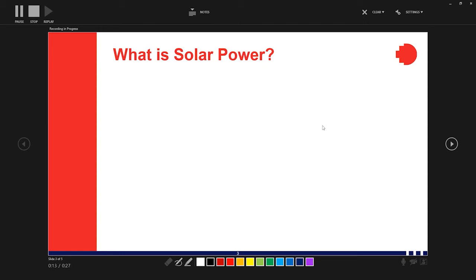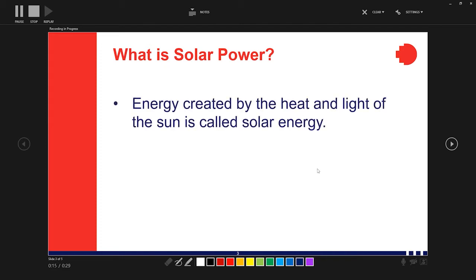What is solar power? Let's explore this. Energy created by the heat and light of the sun is called solar energy. So there you go, I've just narrated the first bullet point, and let's assume everything I'm saying right now is what I'll want to remove later, and now let's continue on to the next bullet point.